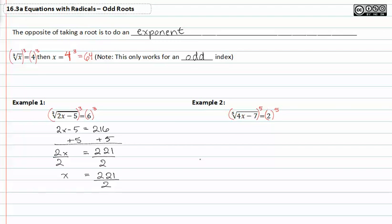We've performed the opposite operation on the fifth root of four x minus seven, so all that's left is the four x minus seven. Two to the fifth is equal to 32. Now all we have to do is solve for x.